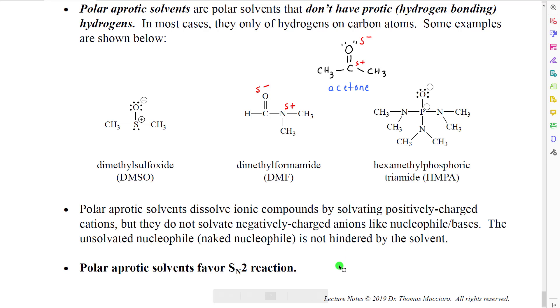Polar aprotic solvents dissolve ionic salts by solvating the positive ion and ripping it out of the ionic structure and leaving the negatively charged anions unsolvated, but forced to sort of float around without their positive charged partners. Therefore, the nucleophiles are not hindered by the solvent, and polar aprotic solvents dramatically favor SN2 reaction.